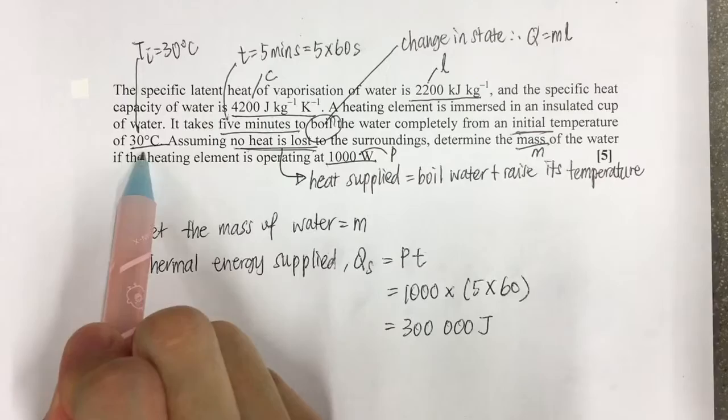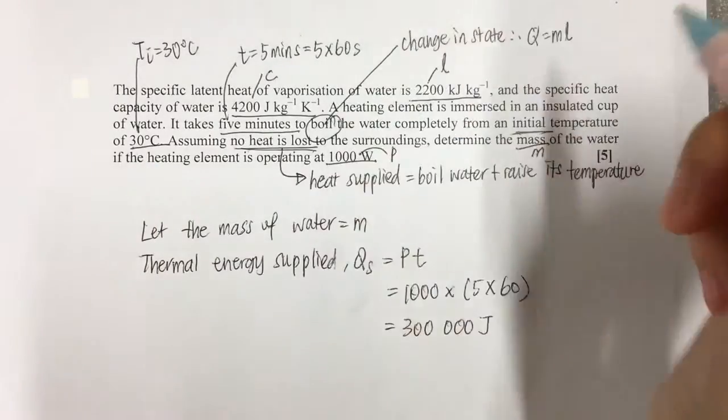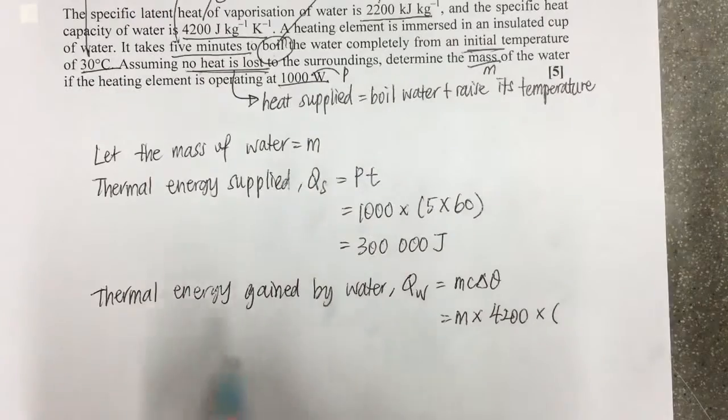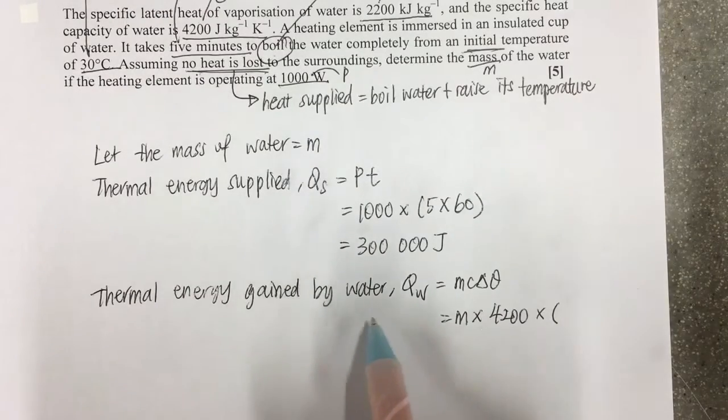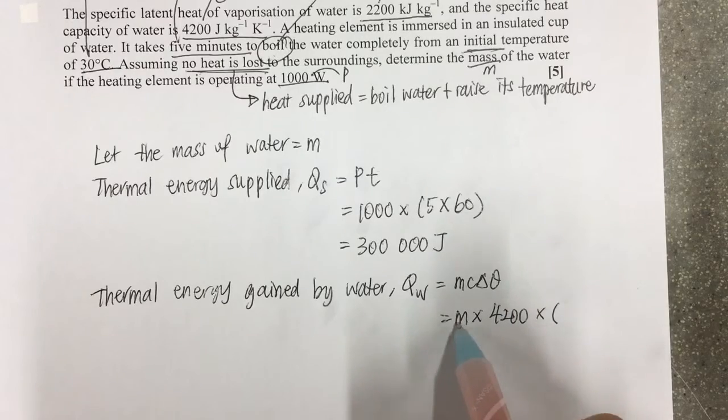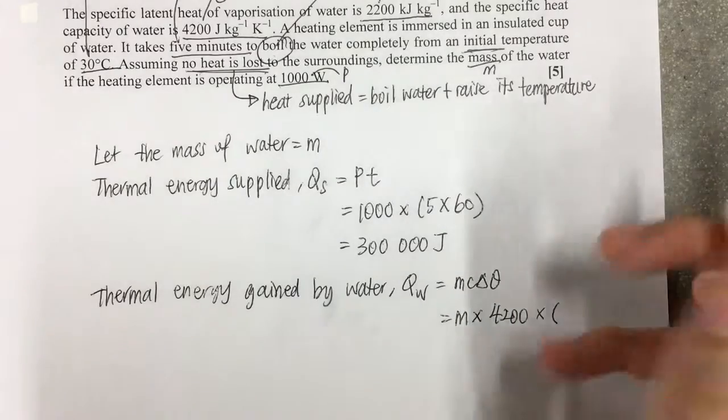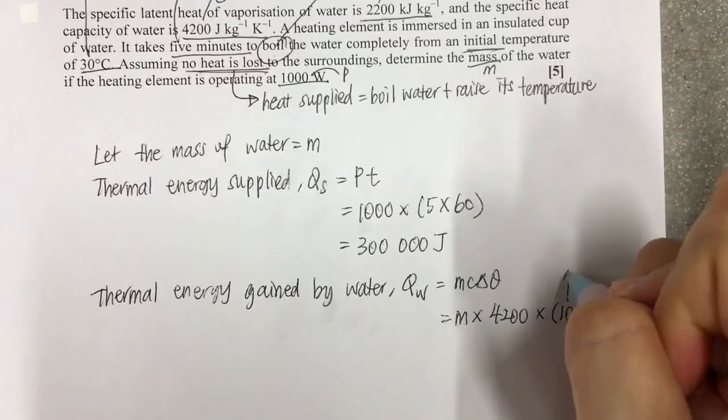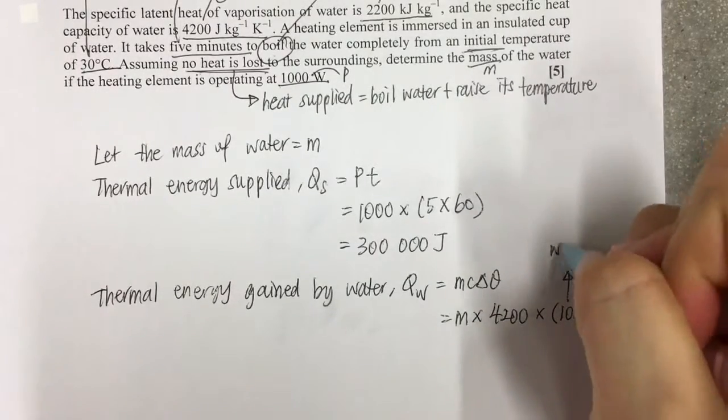From 30 degrees Celsius to 100 degrees Celsius and to boil the water. So the thermal energy gained by the water Qw equals mc delta theta, so m times 4200 times 100 minus 30, which is 100 because water boils at 100 degrees.